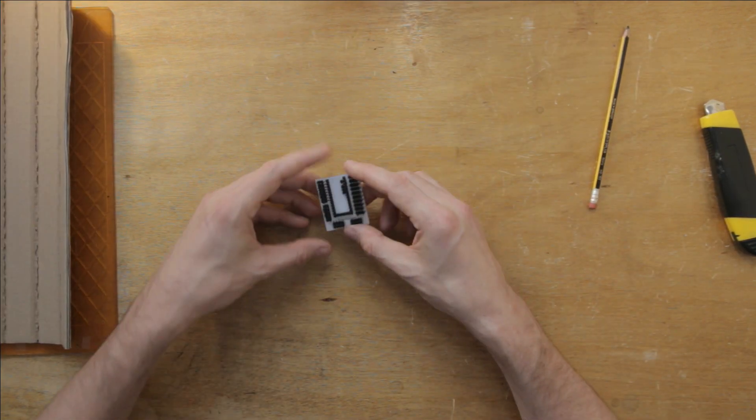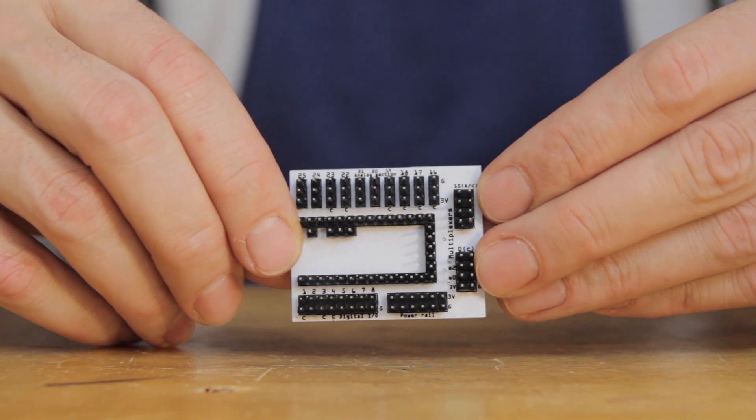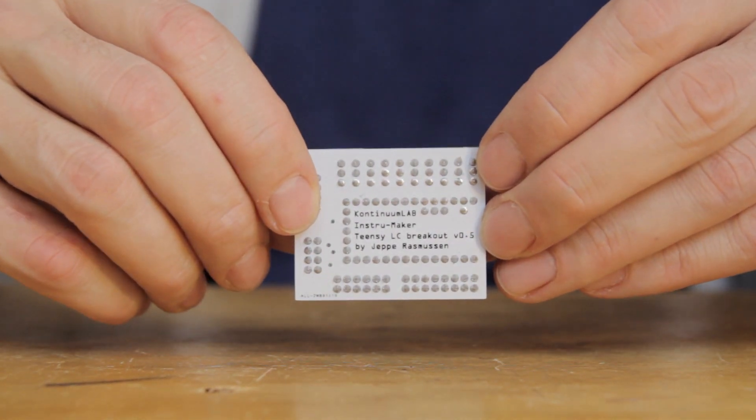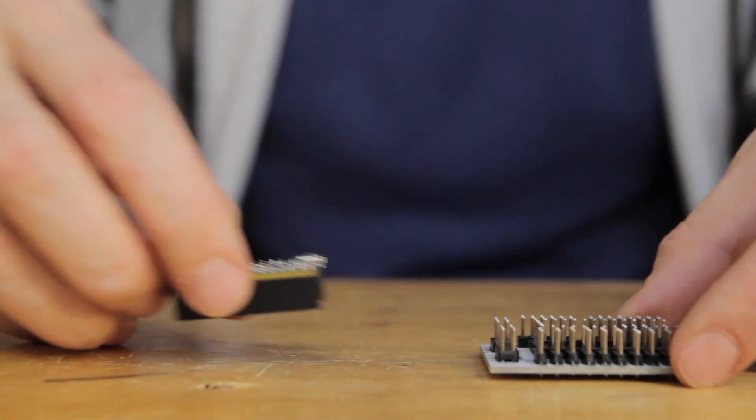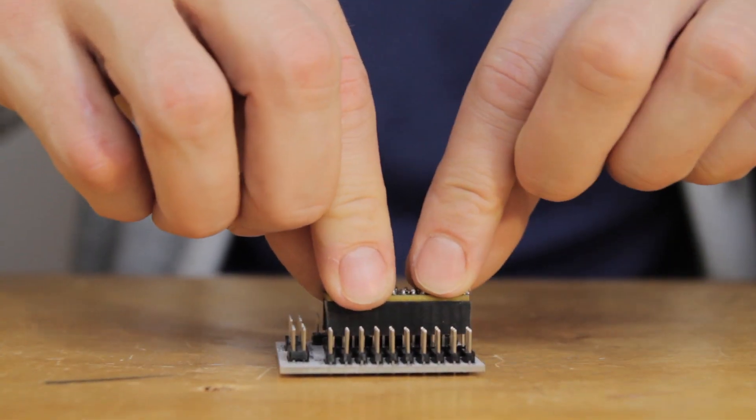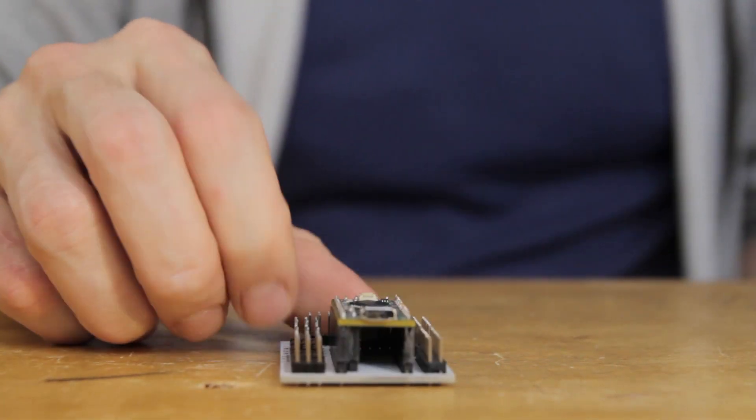Next up, let's get out some electronics. I designed this breakout board specifically for the Continuum Lab workshops, and it has everything I need to facilitate these instrument building projects. The microcontroller that I use is the Teensy LC, which is quite cheap but powerful, and very importantly, it has USB MIDI.